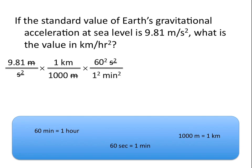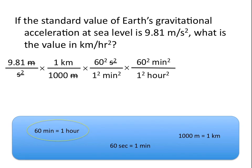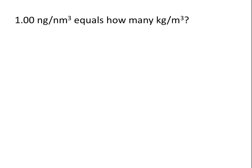We're going to do the same thing for the next conversion factor, because 60 minutes is equal to 1 hour. Minutes will have to go on the top and hours on the bottom. Instead of writing out the conversion factor twice, I squared the whole thing. Remember: if you're going to square the units, you also have to square the number. So because we squared minutes, we also square 60, and we also square hours and 1. This cancels minutes squared on top with minutes squared on the bottom, giving us kilometers per hour squared. When you punch this into your calculator, you get 1.27 times 10 to the fifth kilometers per hour squared.